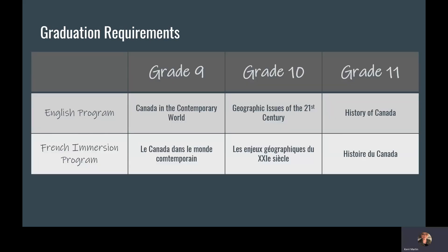Students must take a social studies class for grades 9, 10, and 11, and each grade level has a different class that they must take. At the grade 9 level, it is Canada in the Contemporary World, looking at Canada in geography, politics, and what our role is within the global community. Grade 10 is Geographic Issues of the 21st Century, looking at climate change, where our food comes from, the impact of industry on the environment, and how humans interact with the environment.